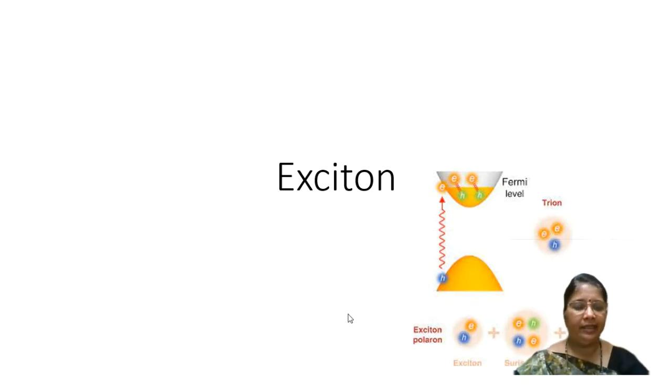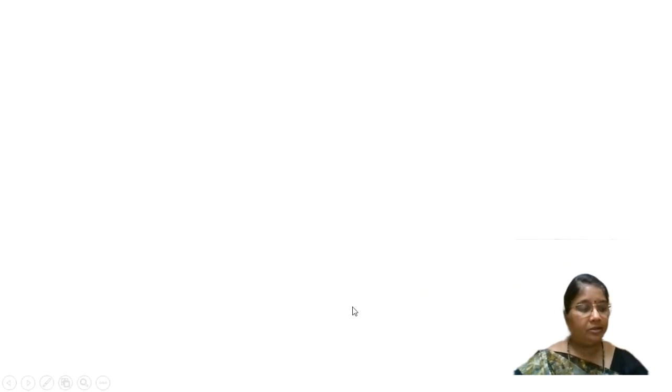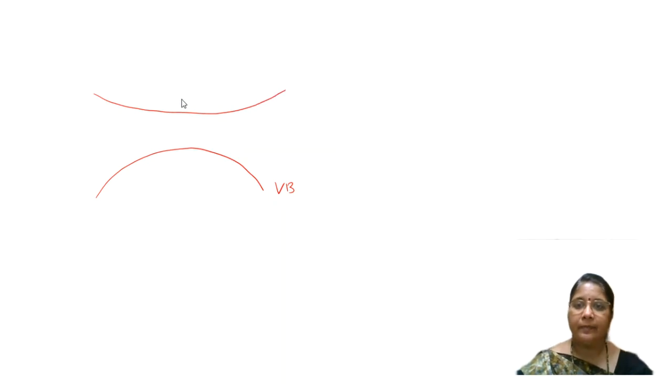You have been learning about valence band, conduction band, and the existence of electron-hole pairs in a valence band. I have here a valence band and a conduction band with an energy gap EG. A valence band has an electron-hole pair.